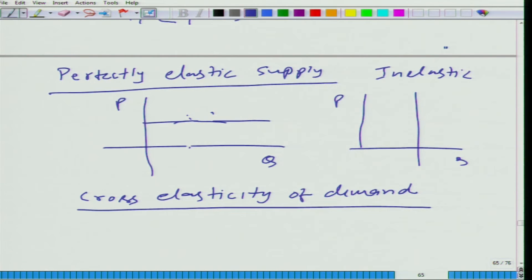What we are talking about is the price of that good remained the same, but the price of other good has gone up, or price of the other good which are substitutes or complement, they have gone up.